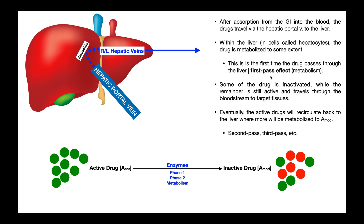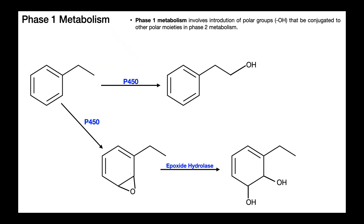The first pass effect is a general term describing that some percentage of a drug is going to be metabolized before it ever reaches the general circulation. This metabolism in the liver is carried out by enzymes contained within the hepatocytes, and the metabolism is divided up into two phases: phase one metabolism and phase two metabolism. These phases describe different ways that the drug is chemically modified to prepare it for complete inactivation and removal from the body.